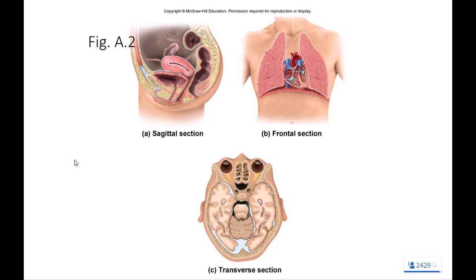As we take a look here, we can see some different slices. In figure A, we have a mid-sagittal slice through the female's abdominal pelvic cavity. In figure B, we have a frontal or coronal slice through the thoracic cavity. And then in figure C, we have a transverse slice through the cranium.